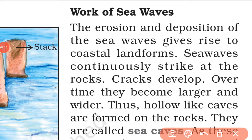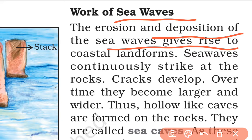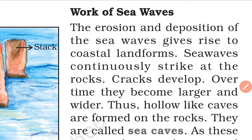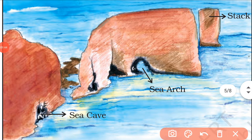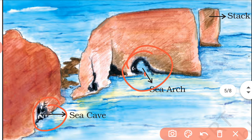Work of sea waves: Erosion and deposition by sea waves gives rise to coastal landforms. In coastal areas, sea waves continuously strike at the rocks, and cracks form, then holes begin to develop. First, small holes form, which are called sea caves, and then they gradually become bigger and more open — these are called sea arcs.